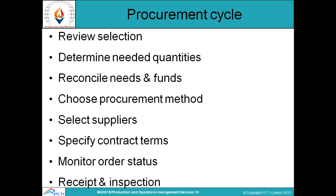In the procurement cycle, we first review the selection and determine the needed quantities. We then identify and reconcile quantities, balance funds, and choose the procurement method — determining in which way we can procure a particular product with the available resources and arrange the product accordingly.